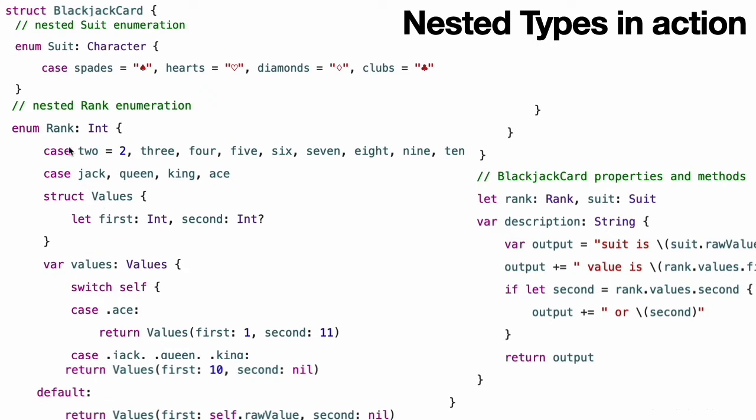The Suit enumeration describes the four common playing card suits, together with the raw character value to represent their symbol.